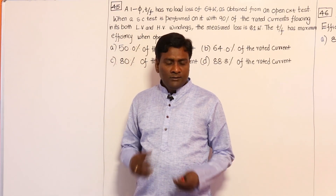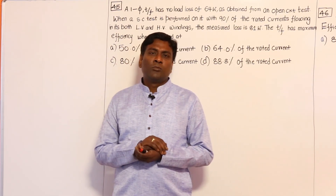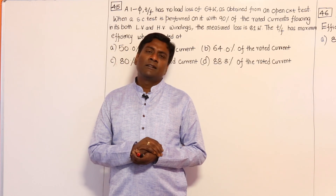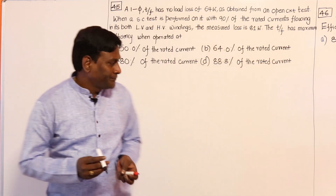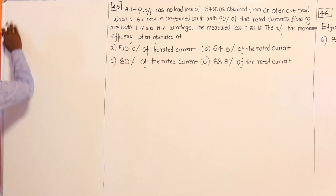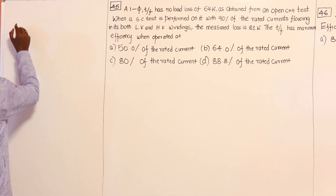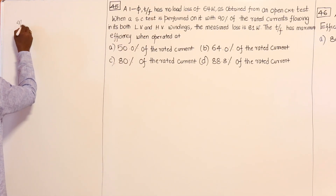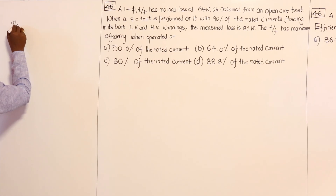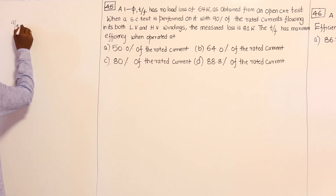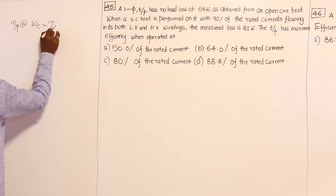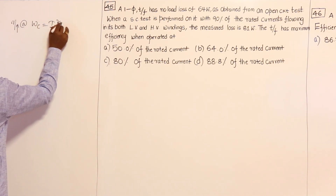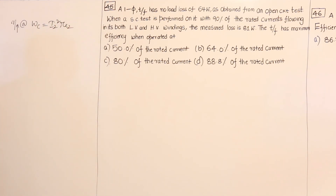In this session, let us calculate some problems on efficiency and derive the equation for maximum efficiency. In our last session, we discussed that maximum efficiency will happen when core loss equals copper loss — I²R₂.